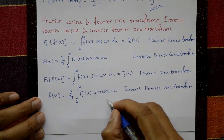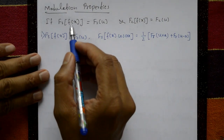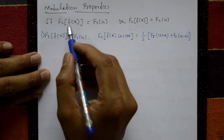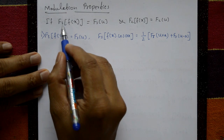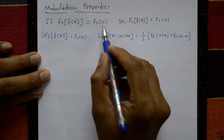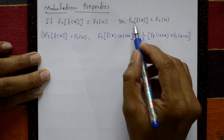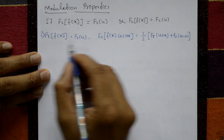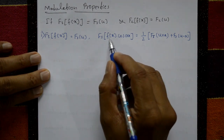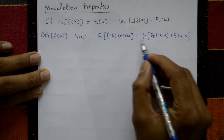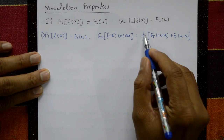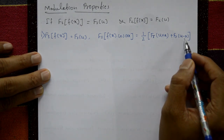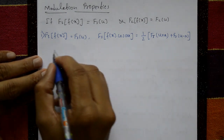Remember these important formulas. There are four types of modulation properties. The first modulation property: Fs{f(x) cos(ax)} equals (1/2)[Fs(u+a) + Fs(u-a)]. Here 'Fs' denotes Fourier sine transform and 'Fc' denotes Fourier cosine transform.